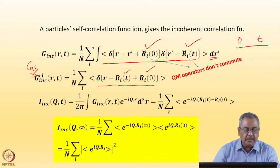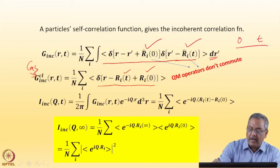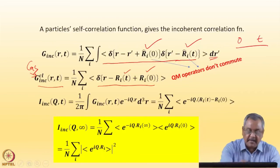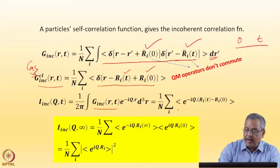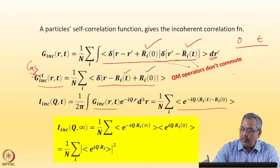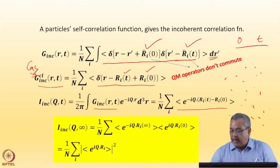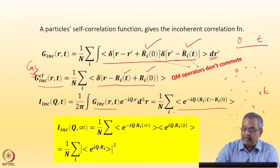The incoherent intermediate scattering function is the Fourier transform of this classical G_incoherent(r,t): it equals the integral of e^(iq·r) G_incoherent(r,t) d³r. Substituting the delta function, this becomes e^(iq·(r_i(t) - r_i(0))), summed over all particles and averaged over the ensemble. So I add up particle by particle — each particle's position at t=0 and its position at t — computing the ensemble average of e^(-iq·(r_i(t) - r_i(0))).